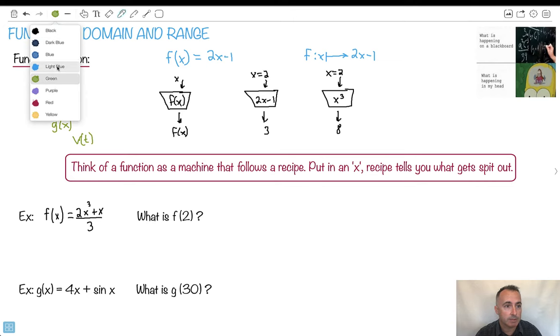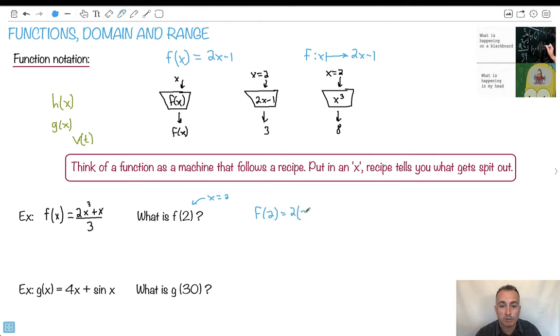We can practice. Let's say f(x) equals 2x cubed plus x over 3. And if I make this f(2), what does that really mean? That means make x equal to 2 everywhere I see an x here. So f(2) is going to be everywhere I saw an x, I'll replace it with a 2. So 2 times x cubed becomes 2 cubed, plus 2 over 3.